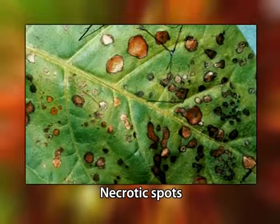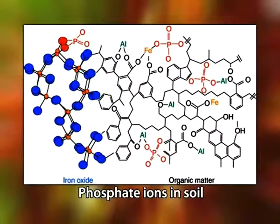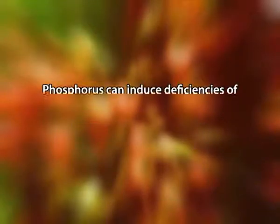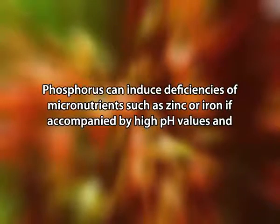Leaves may be malformed and contain small spots of dead tissue called necrotic spots. Additional symptoms of phosphorus deficiency include production of slender but not woody stems, death of older leaves, and delayed plant maturation. In contrast to nitrogen, excess phosphorus rarely has a direct toxic effect under agricultural conditions, because phosphate ions are firmly absorbed and immobilized in the soil. However, it can induce deficiencies of micronutrients such as zinc or iron if accompanied by high pH values and iron oxide in the soil.